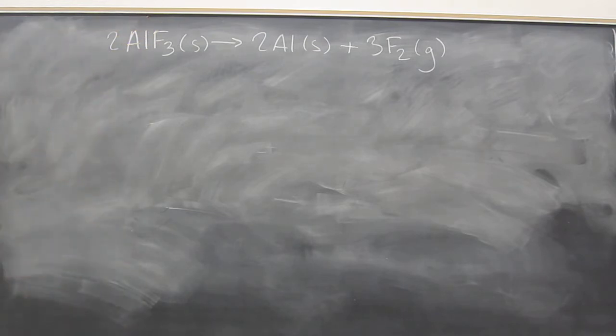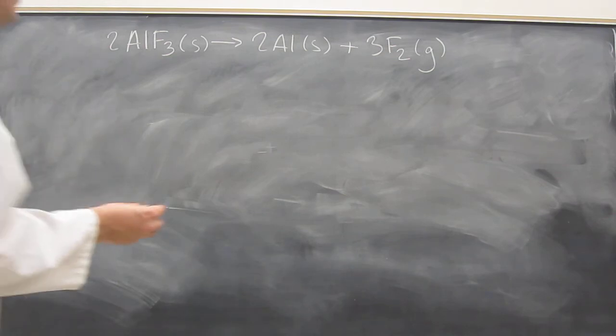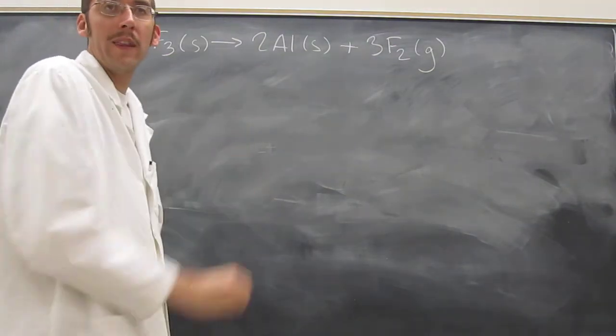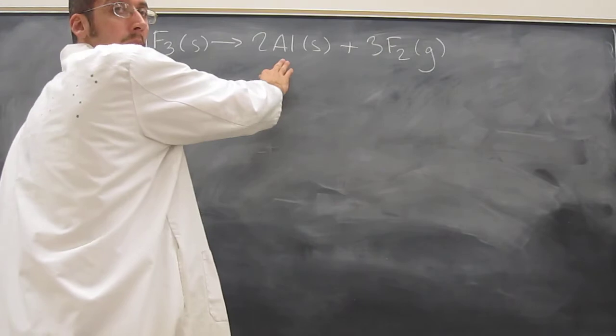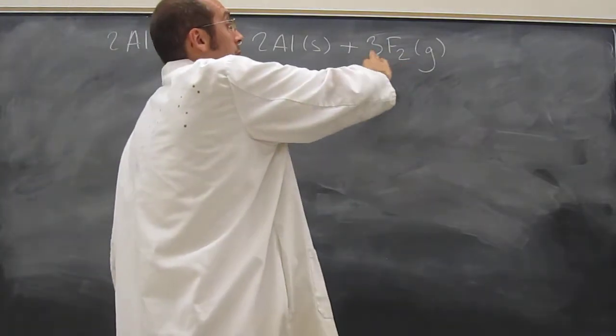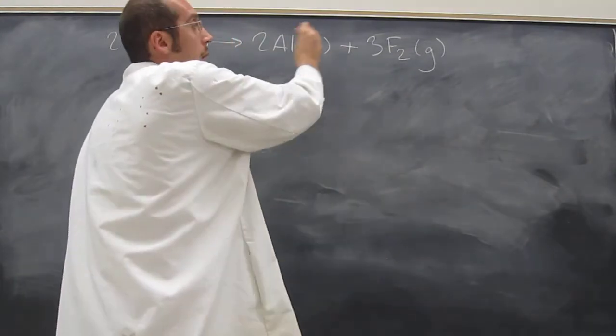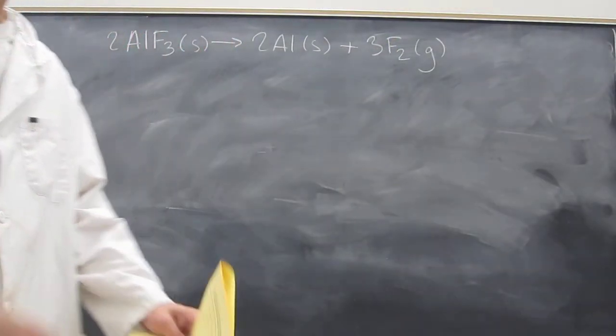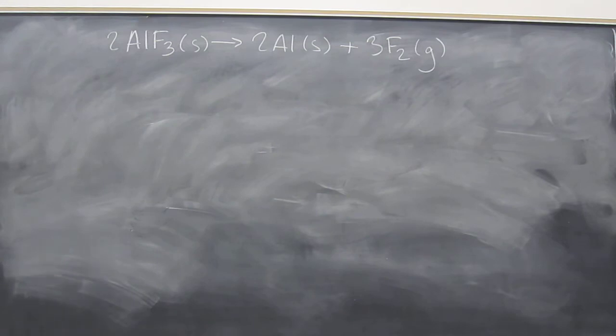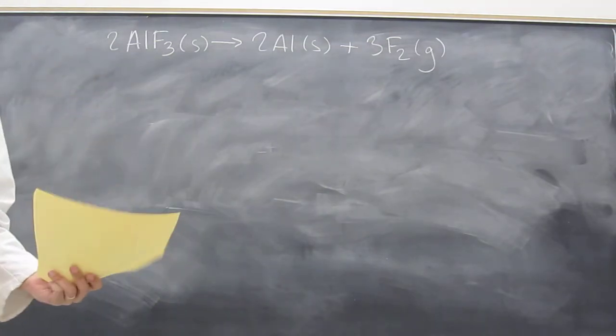It's real easy to figure it out, because elements that are uncombined with anything else, like aluminum here or fluorine here—fluorine is uncombined with another type of element—those are always zero oxidation states. Anything that's uncombined. Here we've got something that's combined, right? So its oxidation state is going to be different.